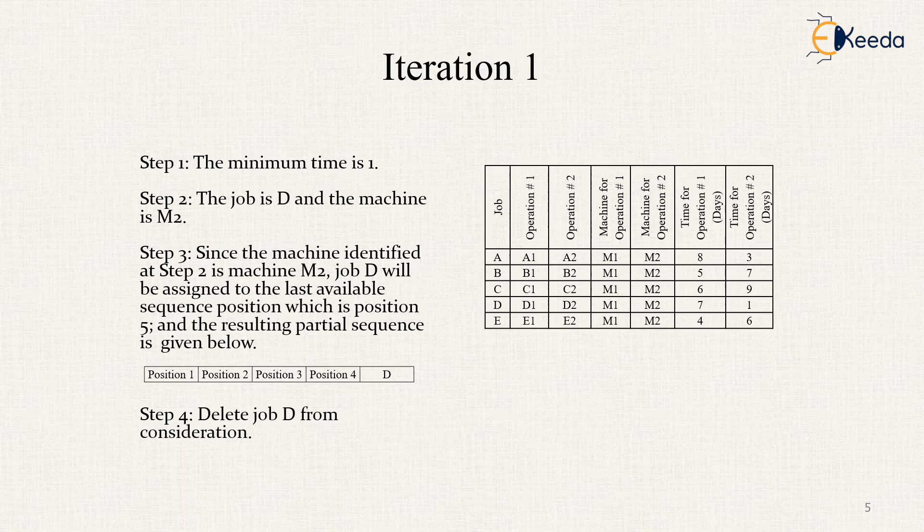Based upon that we do the first iteration where the minimum time is 1 which is for the job is D and the machine is M2. Hence, the machine is identified at step 2 is machine M2 or for D the machine is M2 and job D will be assigned to the last available schedule sequence which is in position. And the resulting partial sequence is given below that is position 1, 2, 3, 4 and then last one is D.